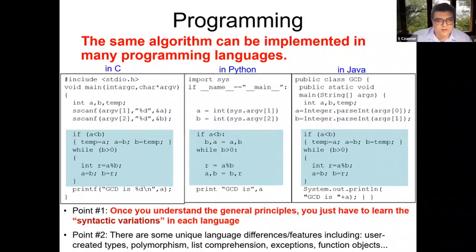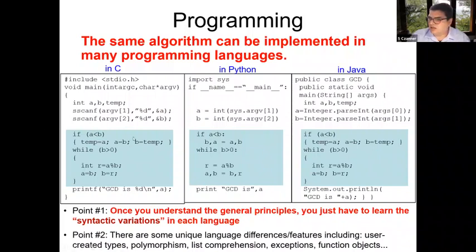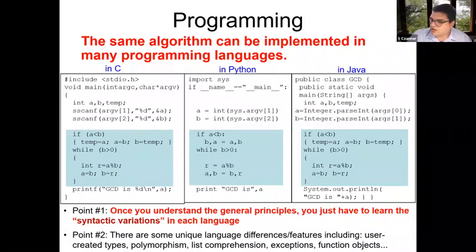Here is a Euclidean algorithm, also called Euclid's algorithm, known as Greatest Common Divisor or GCD. The GCD of two numbers is the largest number that divides both of them without leaving a remainder. The algorithm itself is shown here, and as you can see in this example, there are really minor differences in syntax between C, Python, and Java. It confirms the point that once you understand the general principles of programming, you just have to learn the syntactic variations in each language.